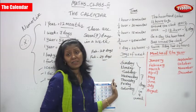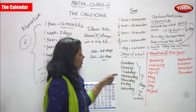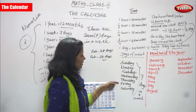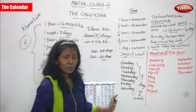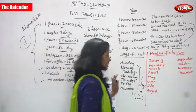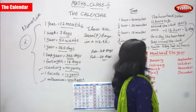So there are 7 days in a week: Sunday, Monday, Tuesday, Wednesday, Thursday, Friday, and Saturday. You know that very well, but I just want you to remember that.